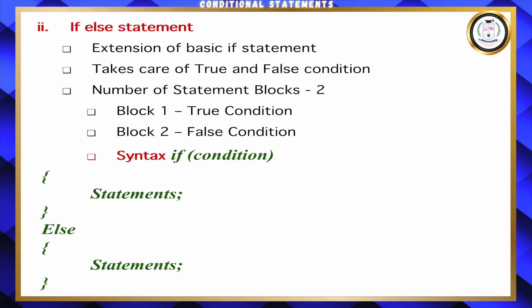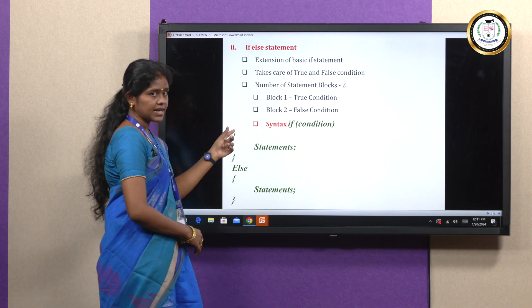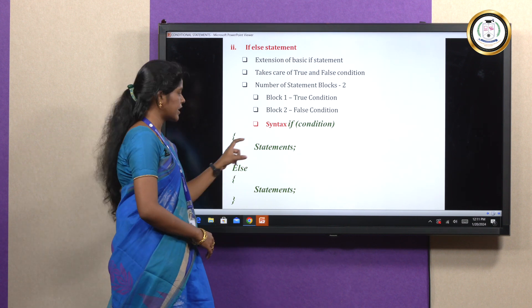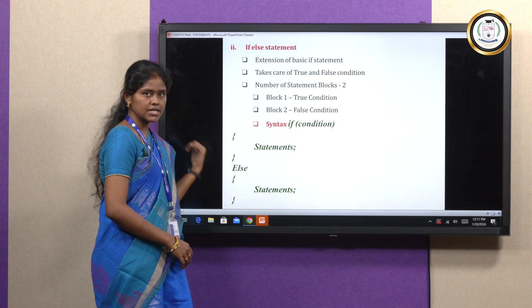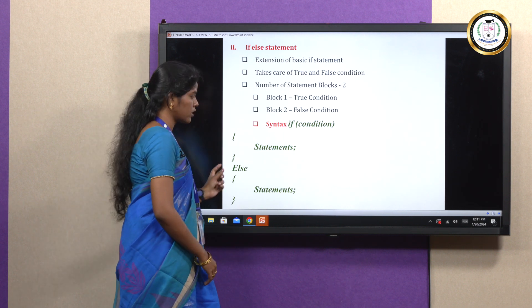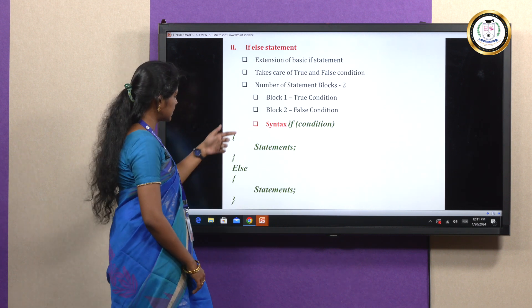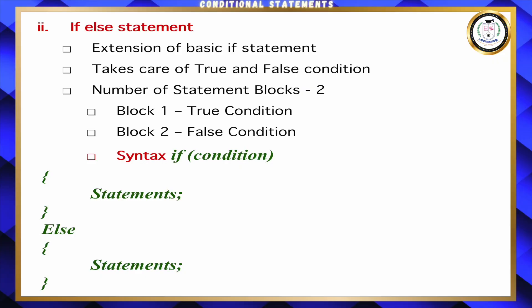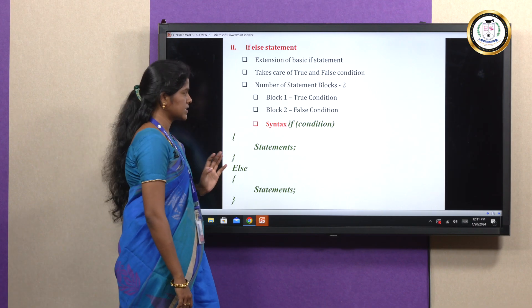The second one is the if-else statement. Same as the simple if statement, but we have a separate block for the false condition also. If the condition is satisfied, it will execute the true block. If the condition is not satisfied, the else part will be automatically executed. This is the simple syntax for the if-else statement.